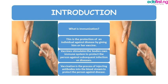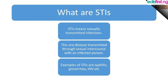Immunization is the protection of an individual against disease by giving him or her a vaccine, and this vaccine stimulates the body's own immune system to protect the person against subsequent infection or diseases. Vaccination is the process of injecting antibodies into the bloodstream to protect the person against diseases.